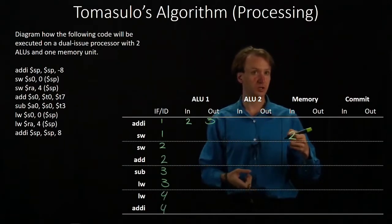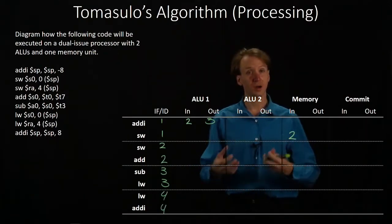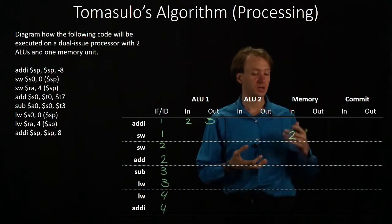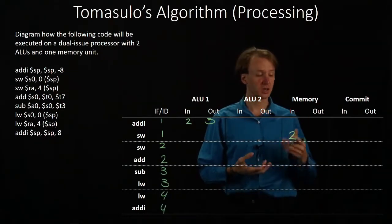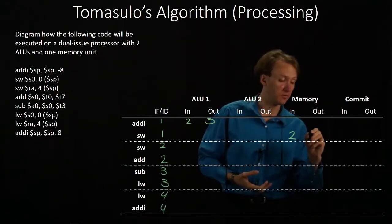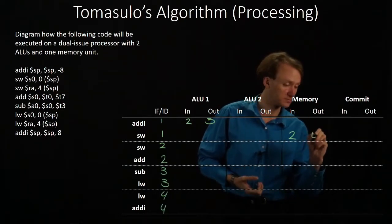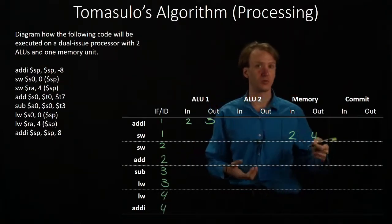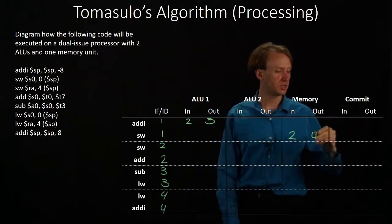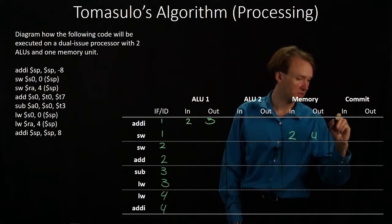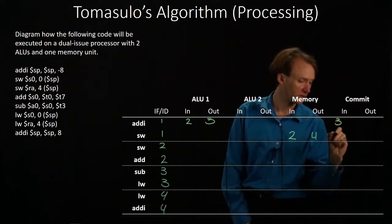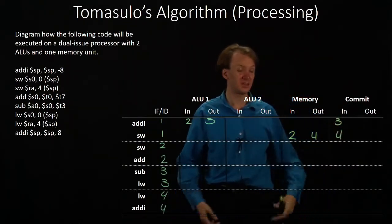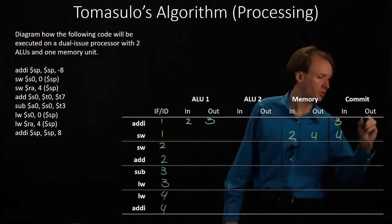Our store word instruction will be able to grab that data off of the bus in cycle three. Then it will have all of its parameters and can run in cycle four. This means that their data will reach the commit unit in cycle three and cycle four, and then those can be committed as soon as they're available.